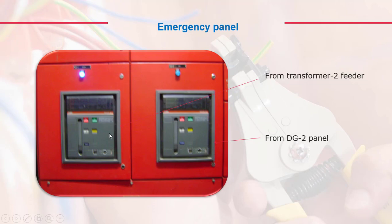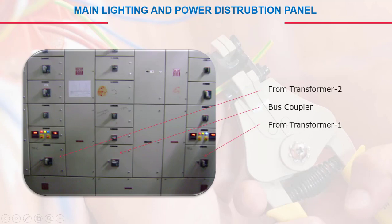You can see the emergency panel receives a feeder from transformer two and a feeder from DG two. In case the transformer fails, the DG can be started immediately. The main lighting and power distribution panel is fed from transformer one and transformer two, with a bus coupler in between. In case one fails, power can be transferred and controlled through the bus coupler.